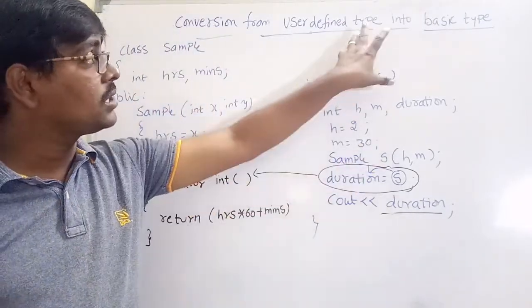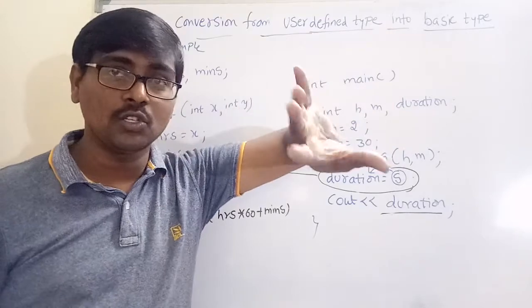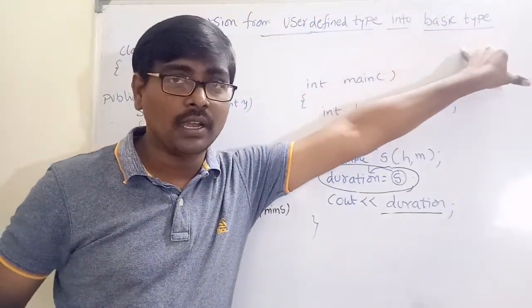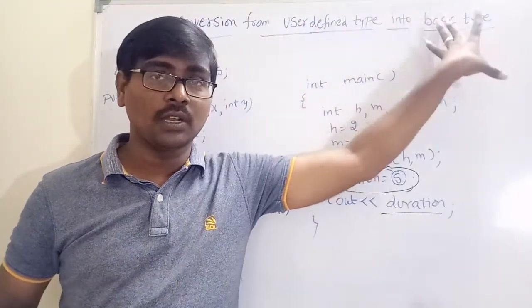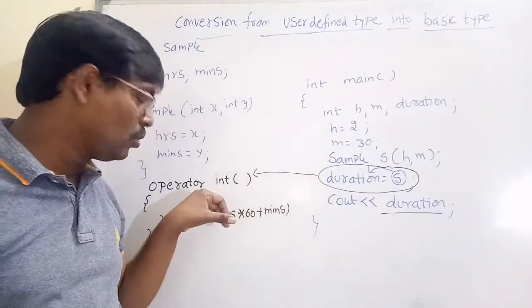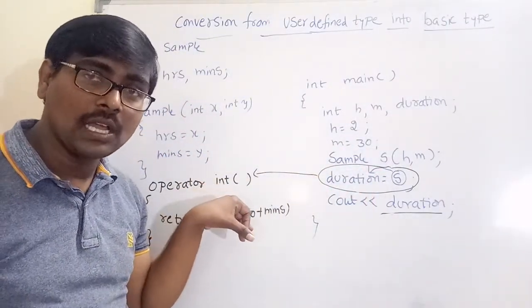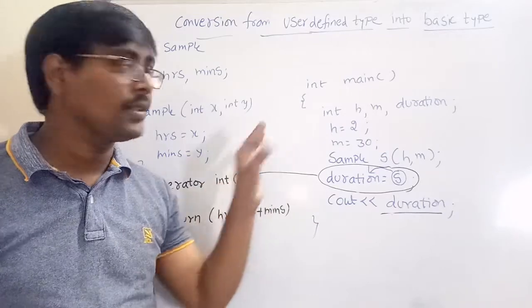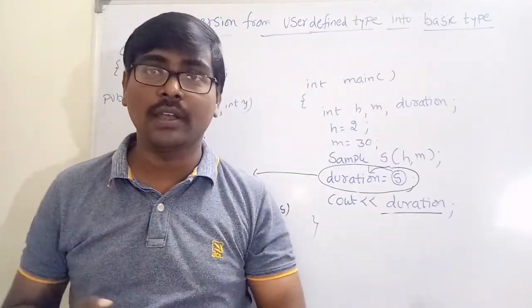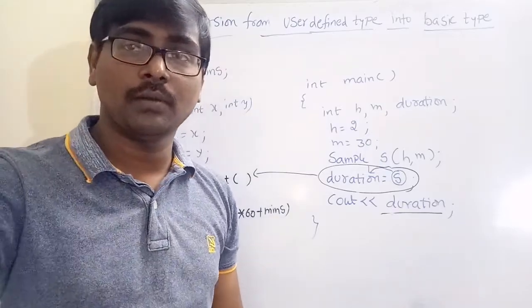The conversion from a higher data type — user defined — to a lower data type — basic — requires that you explicitly call the conversion operator, also known as the cast operator. This is the way to convert a user defined data type into a basic data type. Thank you.